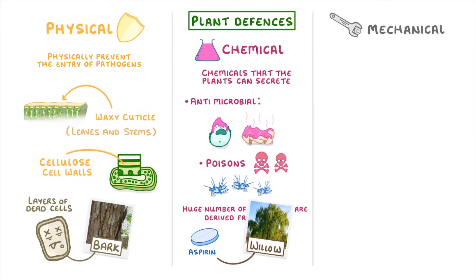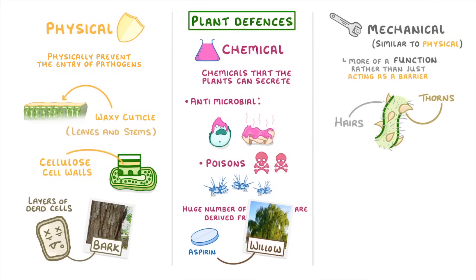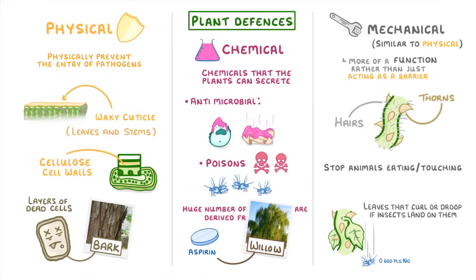And lastly, mechanical defences are similar to physical ones, but have more of a function rather than just acting as a physical barrier. They include things like thorns and hairs that stop animals from eating or touching them, or leaves that curl or droop if insects land on them.